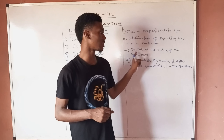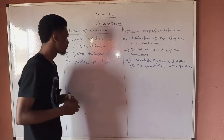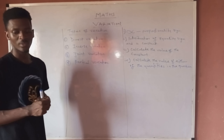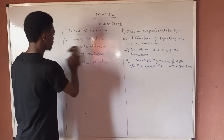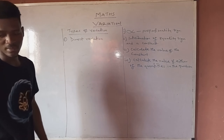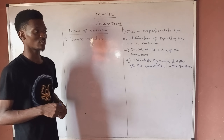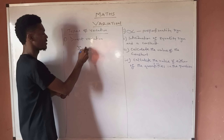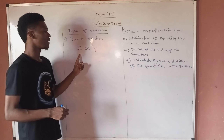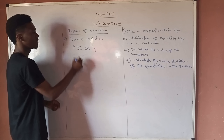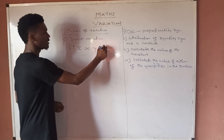Always remember that the constant k is very important to introduce. Now, Direct Variation: it is a type of variation involving two quantities where an increase in one results in an increase in the other. For example, if x varies directly as y, an increase in x leads to an increase in y, while a decrease in x leads to a decrease in y.